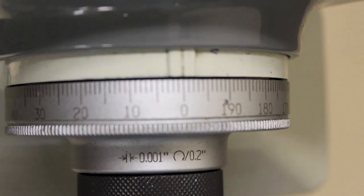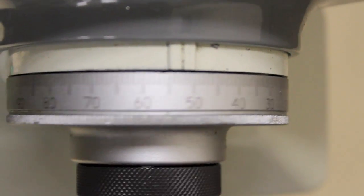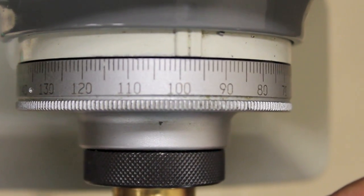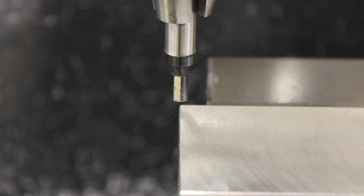Since this edge finder's diameter is 200 thousandths, we must adjust the x0 position over by 100 thousandths to get to the center of the edge finder.